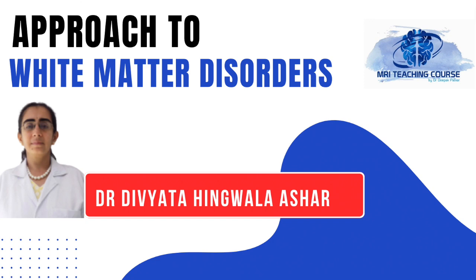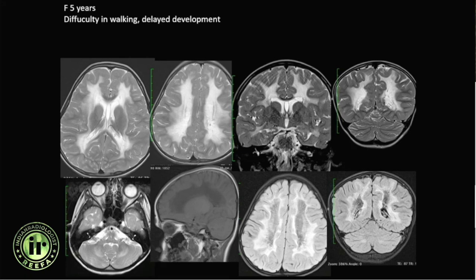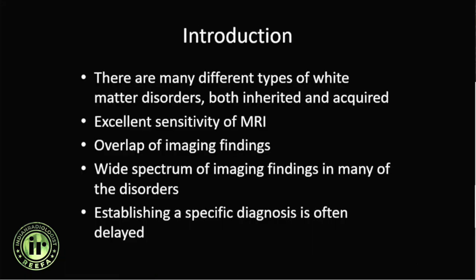This is a presentation on an approach to pediatric white matter disorders. Quite often you may come across cases in which children present with neurological symptoms and extensive white matter changes. White matter disorders typically include a gamut of inborn errors of metabolism — disorders in which there is some problem with the metabolism in the brain due to genetic makeup — and these are also called leukodystrophies. Sometimes they can also be acquired.